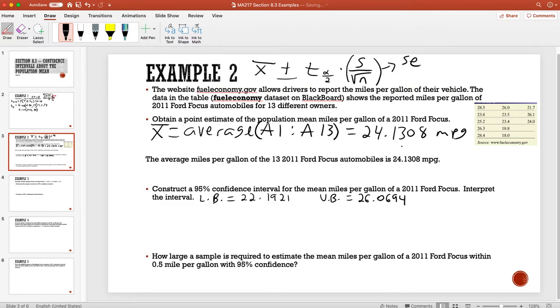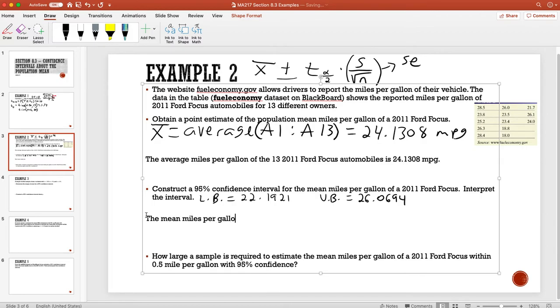We want an interpretation of the interval. In this case, that's going to be the mean miles per gallon of all 2011 Ford Focuses - since all of them would be the population - is between 22.1921 miles per gallon and 26.0694 miles per gallon.